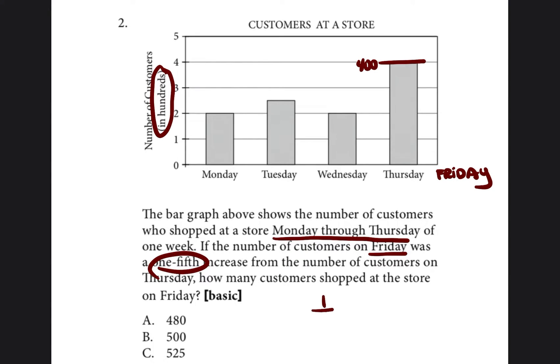And if there's a one-fifth increase, that means you can divide the number 400 by five and you'll be able to get how many additional customers there were on Friday.